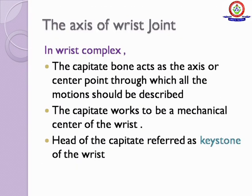The axis of the wrist joint: in the wrist complex, the capitate bone acts as the axis or center point through which all the motions should be described. The capitate works as the mechanical center of the wrist. The head of the capitate is referred to as the keystone of the wrist.